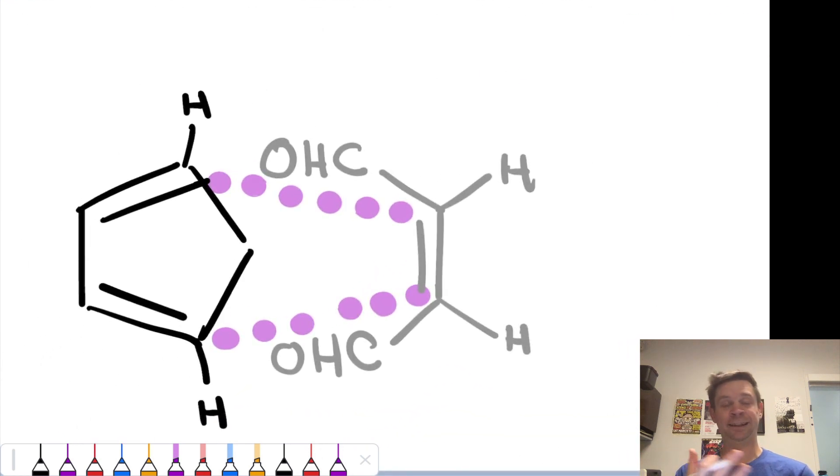imagine the diene is a little bit closer to you, and you're looking down on the plane of the diene system. The dialdehyde here, the dienophile, is further back away from you, but again, you're looking at the plane of the alkene.